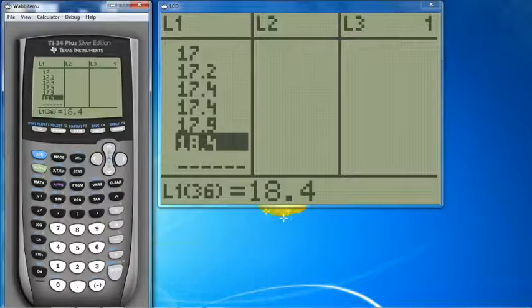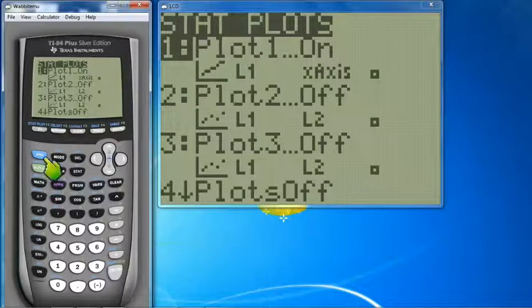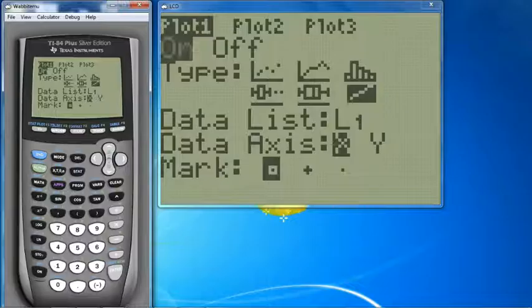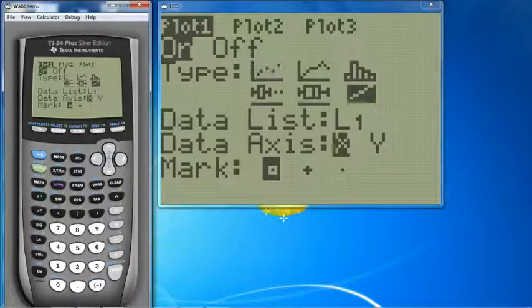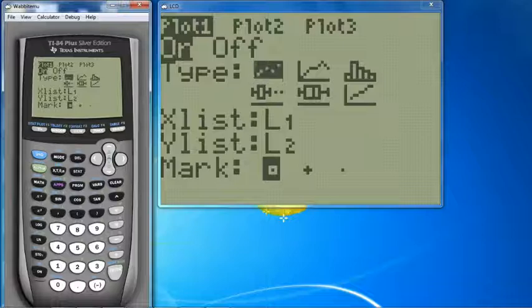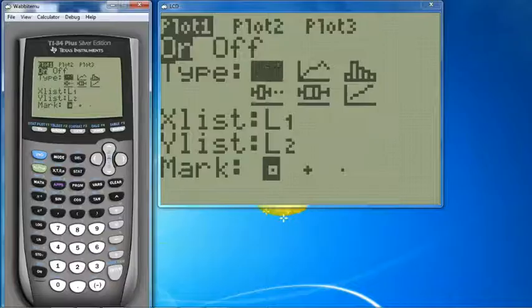Let's go to second Y equals. That's our stat plot. I'm going to turn it on. So make sure you hit enter on plot one and just turn it on. Highlight on. So for all these graphs here, this first one, that's just a regular scatter plot. You've made those in previous classes. But we don't have an X variable or a Y variable.